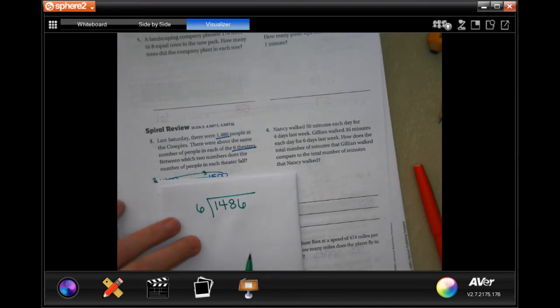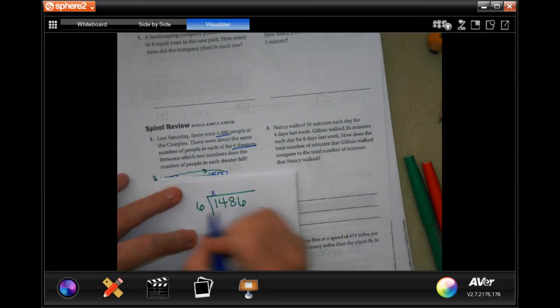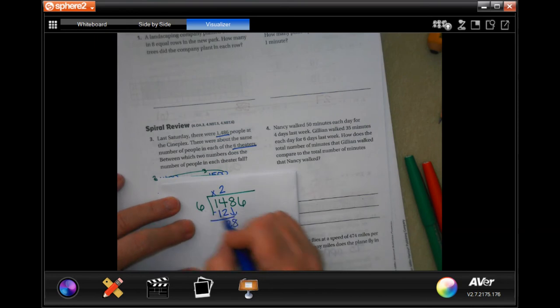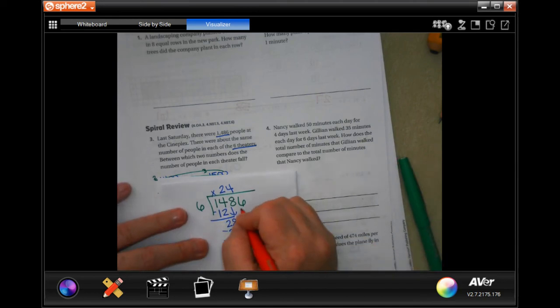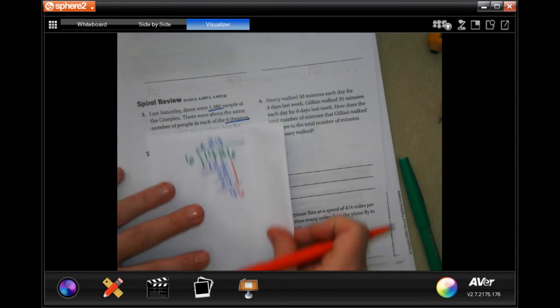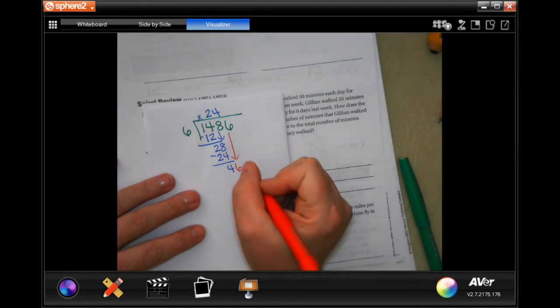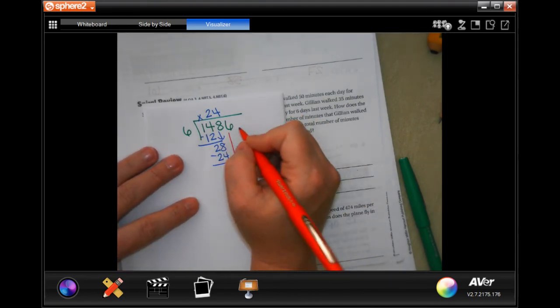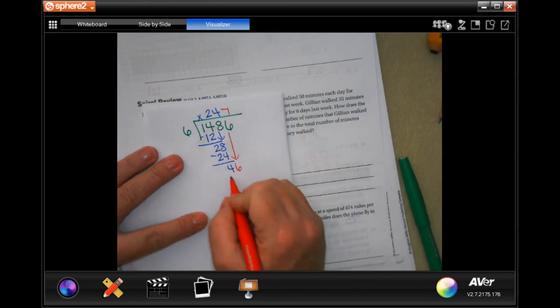So, 1486 divided into 6 theaters. Sorry about that, guys. So, 6 isn't going to go into 1. 6 will go into 14 twice for 12. Get 2 left over. 2 is smaller than 6, so I can bring down my 8. 6 will go into 28 four times. 4 times 6 is 24. Subtract get 4. 4 is smaller than 6, so I'm going to bring down my other 6. 6 will go into 46. Let's see. 6 times 8 is 48, 6 times 7 is 42.